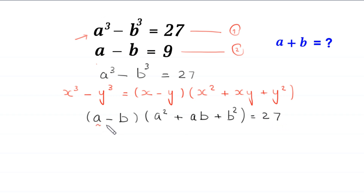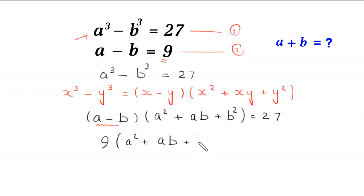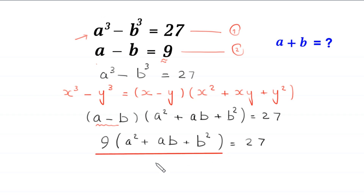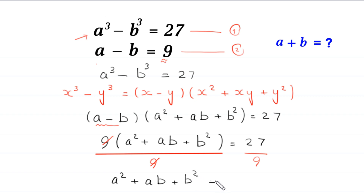Now we replace A minus B with its value of 9 from equation 2. So this becomes 9 times A squared plus AB plus B squared equals 27. We divide both sides by 9, so the 9 cancels out and we are left with A squared plus AB plus B squared equals 3.